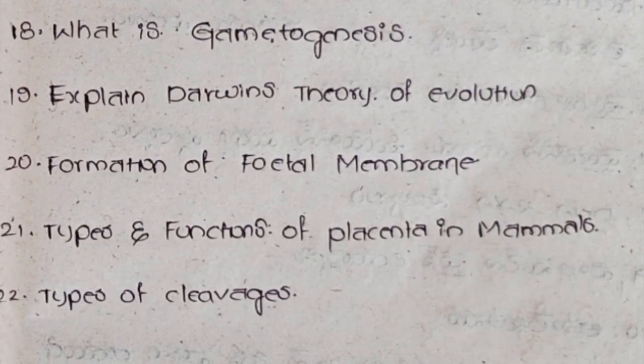Eighteenth, What is Gametogenesis? Nineteenth, Explain Darwin's Theory of Evolution. Twentieth, Formation of Fetal Membrane. Twenty-first, Types and Functions of Placenta in Mammals. Twenty-second, Types of Cleavages.